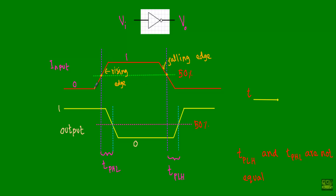As our input is changing from logic 0 to logic 1, after a brief interval of time our output will change its state from logic 1 to logic 0 because it is an inverter gate. When our input changes from logic 1 to logic 0, our output will change from logic 0 to logic 1. This edge of the output pulse is known as the rising edge of the output.